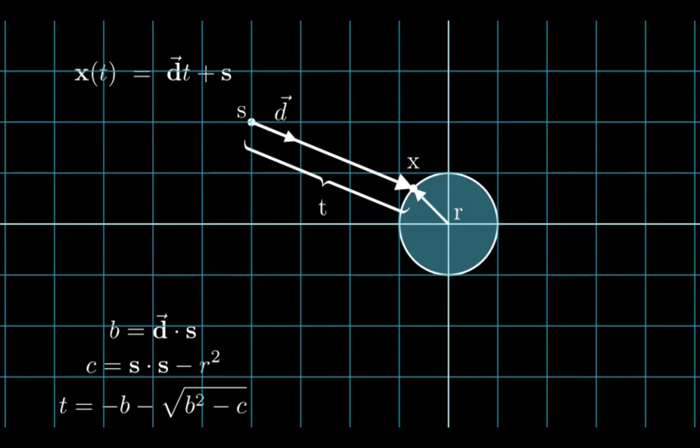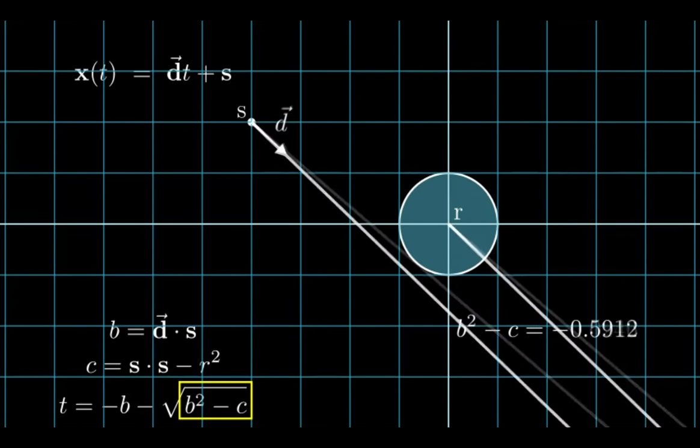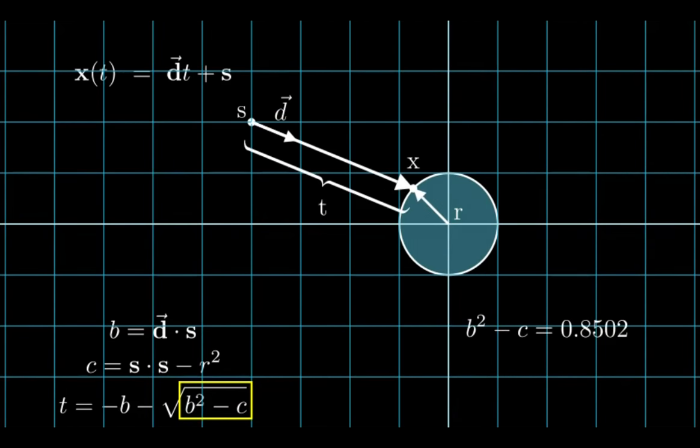The question remains though, what happens if the radicand of our square root is negative? Well, this entire time we've been assuming that the ray and the circle intersect. In the case when they don't, it is logical to imagine that we will get an invalid answer.